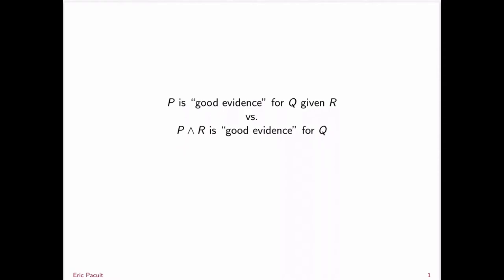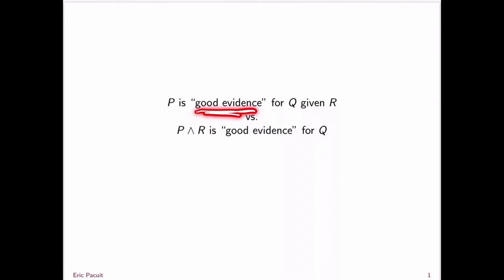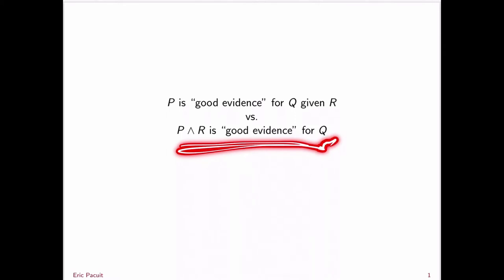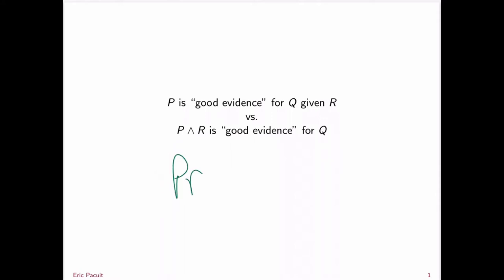Now, the exact relationship between these two phrases is going to depend on what exactly we mean by good evidence. But typically, when we talk about something being good evidence for something else, we're going to take a conditional probability. That's very clear with P and R being good evidence for Q — we're going to be making some claim about the probability of Q given P and R.